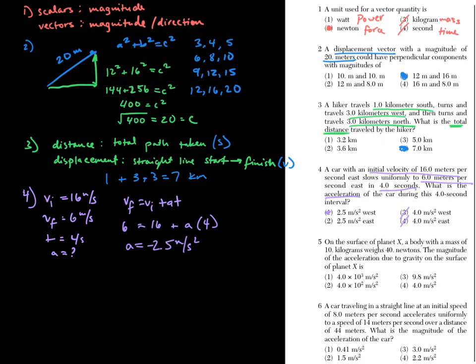Number five puts us on Planet X, so we're not using 9.81 m/s² for gravity. We're looking for the acceleration due to gravity on Planet X. Using F_G = m × g and solving for g, you get 4 meters per second squared, which is choice four.